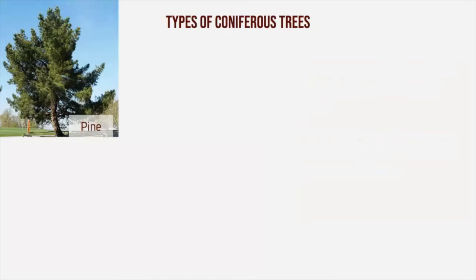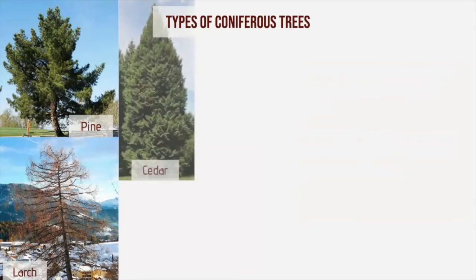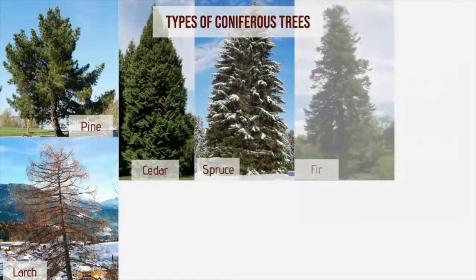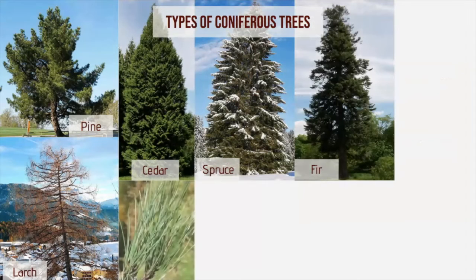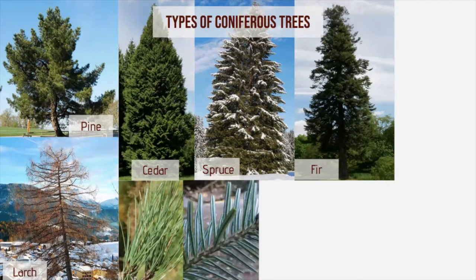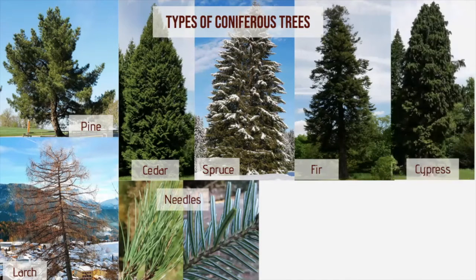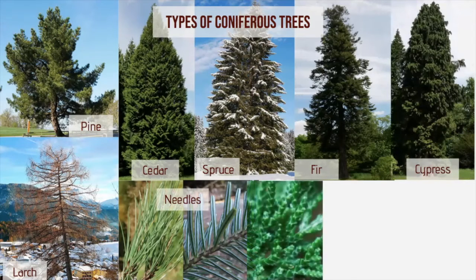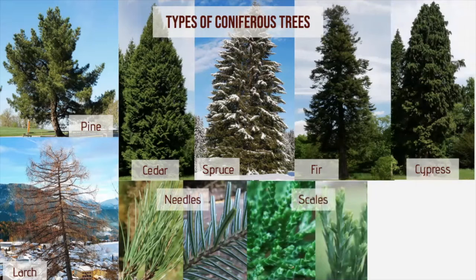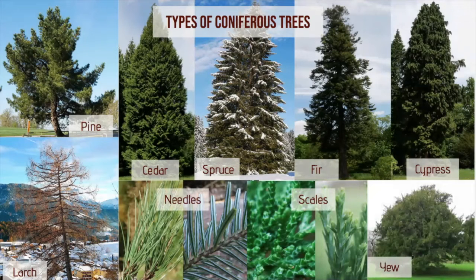Looking at the different types of coniferous trees: all living conifers are woody plants and most of them are tree form. Within the conifers, the pine family is quite large and includes spruces, firs, cedars, hemlocks and larches. They tend to have needle-like or blade-like leaves. Another conifer family is the cypress family, which includes the junipers, and they tend to have scale-like leaves, as you can see in these images. The yews occur in a different family, which we will cover in a little while.